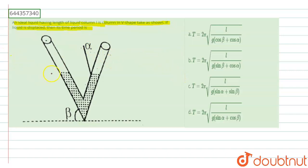Initially, the level of the liquid is the same on both sides. If we displace this liquid from one side by X, then from the other side it will rise by X. The angle on this side is beta, and we consider a reference point D at the bottom.